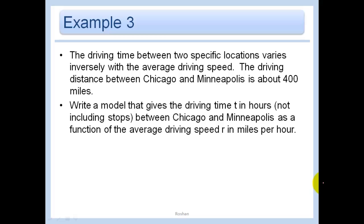The driving time between two specific locations varies inversely with the average driving speed. The driving distance between Chicago and Minneapolis is 400 miles. So why don't we just call the driving time T and let's call the average driving speed the rate or R.